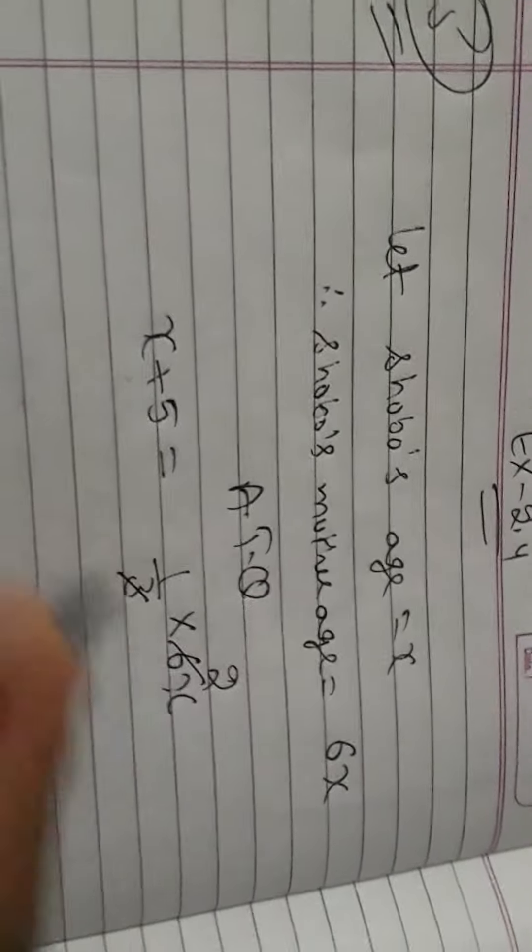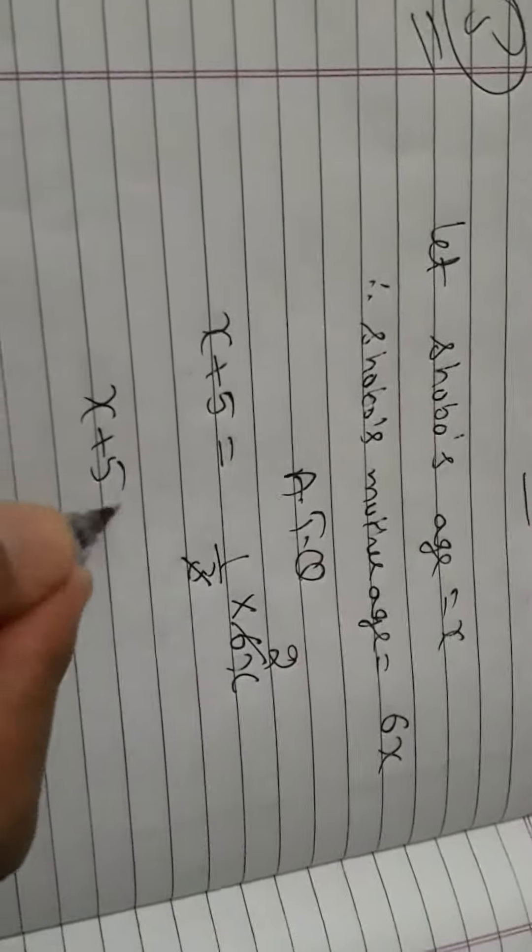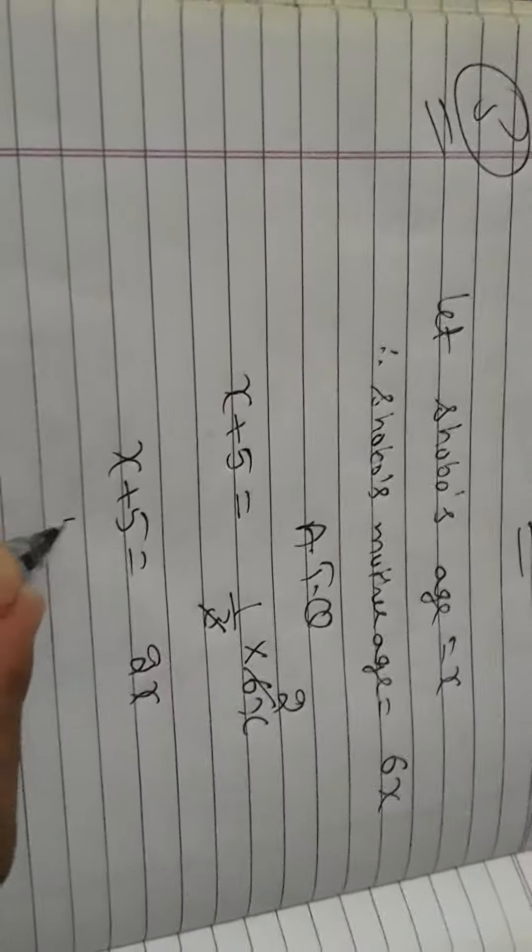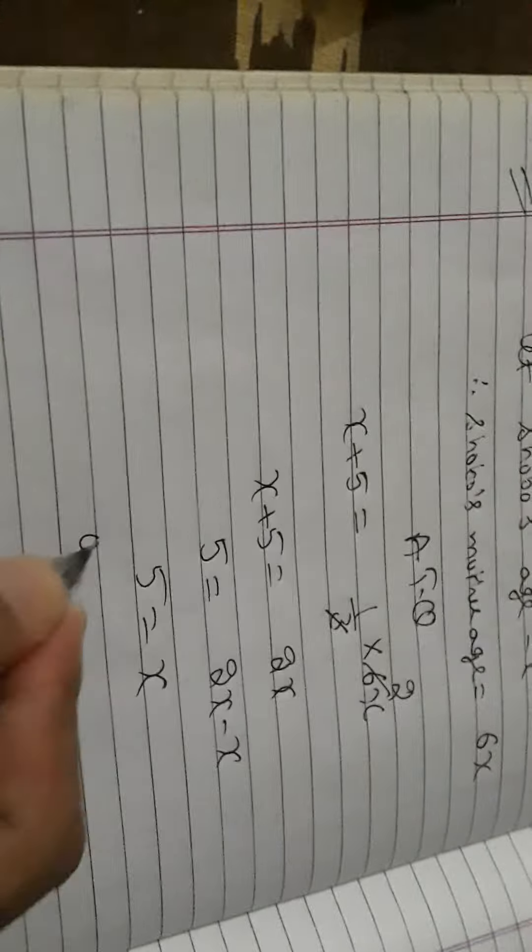So x plus 5 is equal to 2x. Rearranging, 2x minus x equals 5, so x is equal to 5.